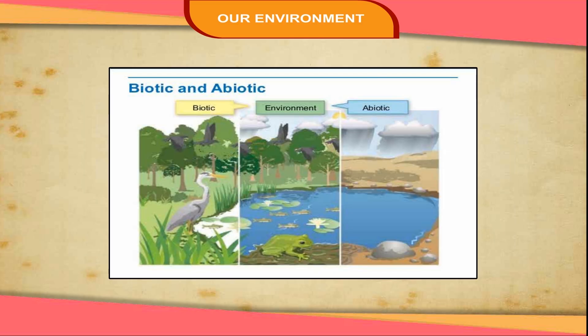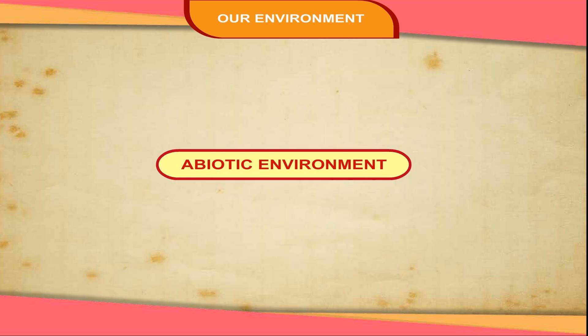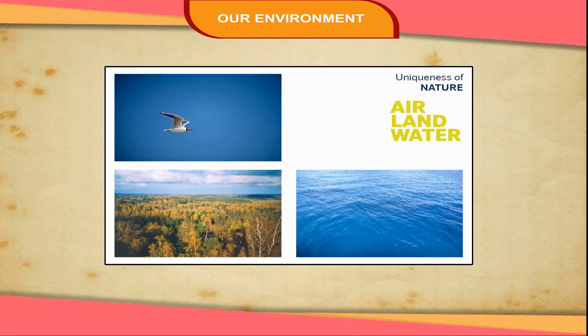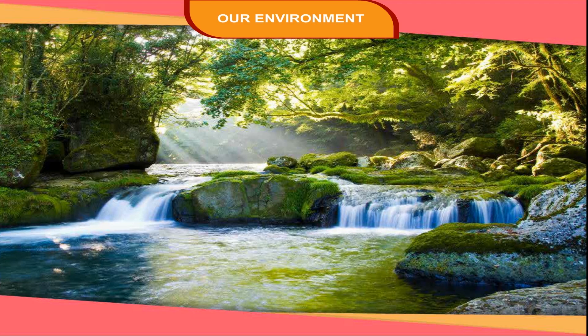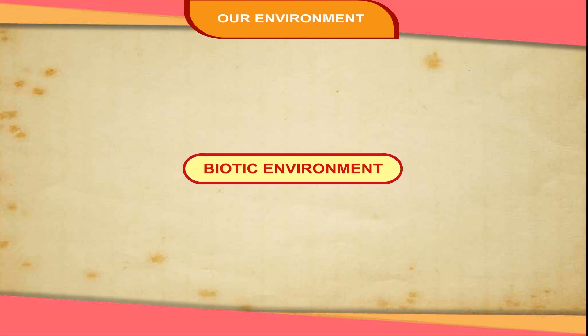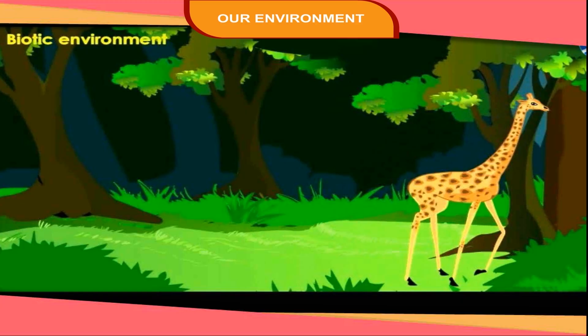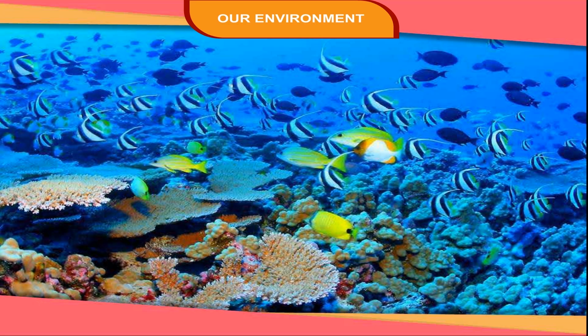They can be grouped into two major categories: abiotic and biotic environment. Abiotic Environment is also known as the physical environment as it comprises land, water and air. A change in the physical environment brings about a change in the biotic environment. Biotic environment is also known as the biological environment as it comprises mankind, plants, animals and other living organisms. Biological environment largely depends on the physical environment.